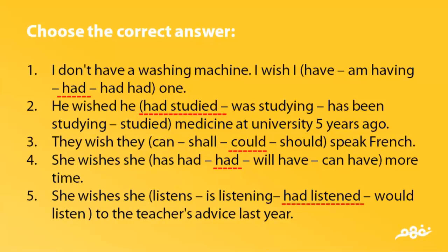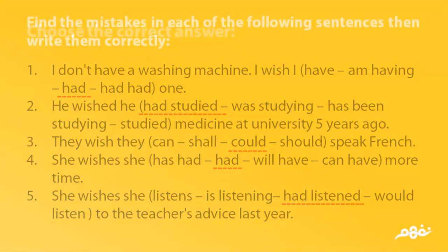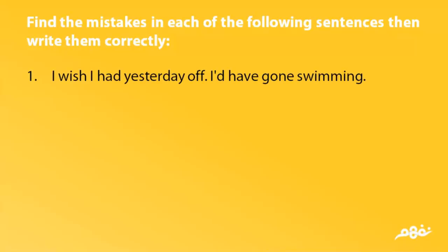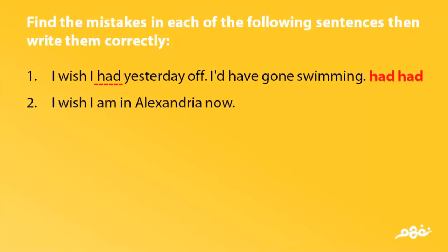Find the mistake in each of the following sentences, then write them correctly. 'I wish I had just three days off — I'd have gone swimming.' The mistake is 'had'; it should be 'had had.' 'I wish I'm in Alexandria now' — the mistake is 'I'm'; it should be 'I were.'